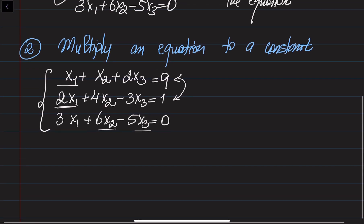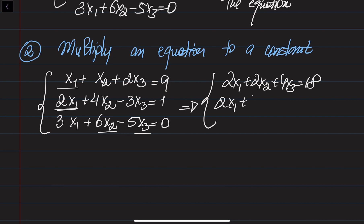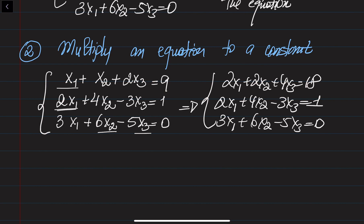Let's work with the system now. If I multiply the first equation by 2, what happens is: 2x1 + 2x2 + 4x3 = 18, 2x1 + 4x3 = 1, 3x1 + 6x2 - 5x3 = 0. So if I multiply the first equation by 2, I get this system.